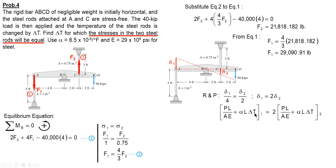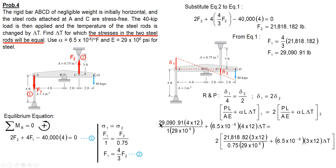The expression is: axial deformation plus thermal deformation of rod one equals 2 times the total deformation of rod number two (axial and thermal). All values are given except delta T. F1 and F2 are now solved. The length of rod number one is 4 feet. For units, force must be in pounds, length in inches, area in square inches, and E in psi. Length is converted from 4 feet times 12 to get inches, and area is 1 square inch. E is 29 times 10 raised to 6 psi.